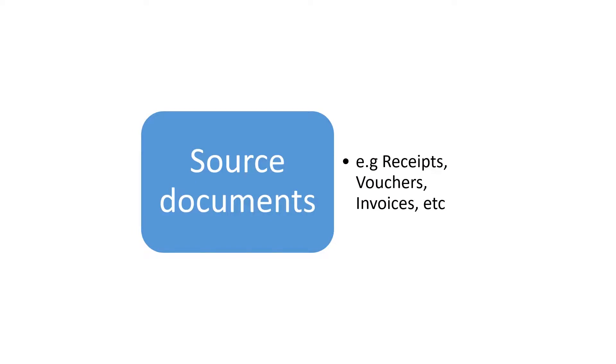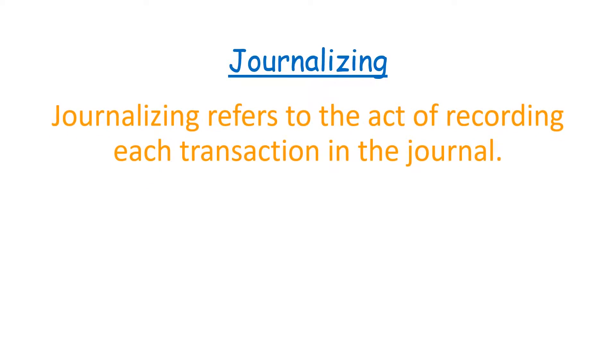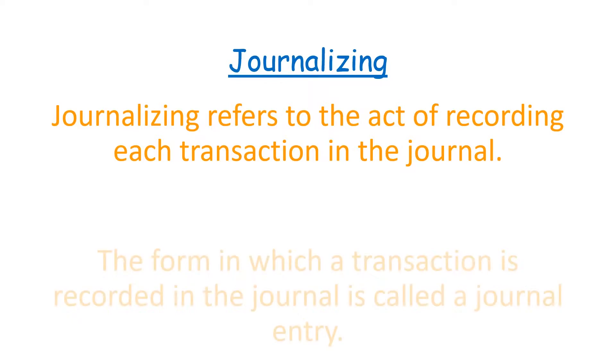For any business that does bookkeeping, the first step of the bookkeeping process is when source documents are generated. By source documents, I'm talking about documents like receipts and invoices and so on. We discussed a bunch of source documents in our previous sessions. These source documents become the basis upon which journalizing is made. Journalizing is simply the process by which we post information to the journals — we discussed journals in our previous session.